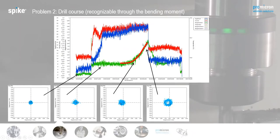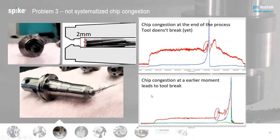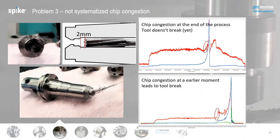The second problem detected with Spike is that the reamer sometimes deflects — these are sporadic mistakes. By looking at the Spike data, we can identify this: in the bending moment at the end of the operation, the tool bends and the bending moment increases, and in Spike Polar we get a circle. The third problem is chip congestion in the last part of the hole. By analyzing Spike data, we can see a jump in torque before the tool breaks — detecting chip congestion so we can stop the machine before tool breakage and machine downtime occur.